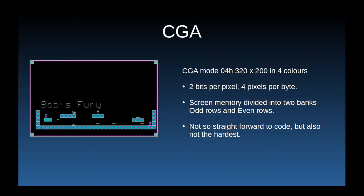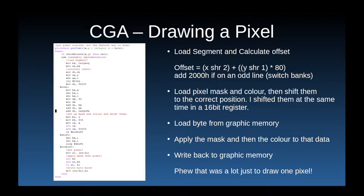CGA on the other hand is quite a bit more tricky to code for. Each byte contains four pixels, so bit masking is needed in some circumstances. Computing the memory address is complicated by CGA memory being divided into two banks — one for even and one for odd rows. Just drawing a pixel is a complicated task. We can use bit operations to speed up the math for calculating the memory offset, then prepare the pixel mask and data for writing. They need to be shifted into position so the correct pixel is drawn to, then we load the relevant byte from screen memory, apply the mask, add the new pixel data, and write it back.